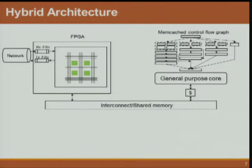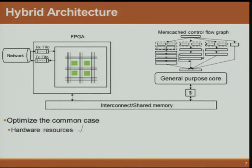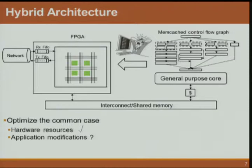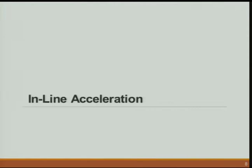One solution for the first problem is using a hybrid architecture — having both FPGA and general-purpose hardware, and implementing the common case handling part of the application on the FPGA. Because that part requires much less hardware resources, we're probably solving the problem of running out of hardware resources. But the second problem — dealing with application modifications — remains. In our recent paper in Computer Architecture Letters, we introduced a technique called inline acceleration, which tries to solve both problems at the same time, and the rest of this presentation is about applying this technique to Memcached.